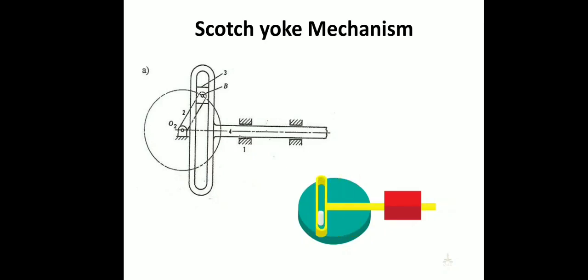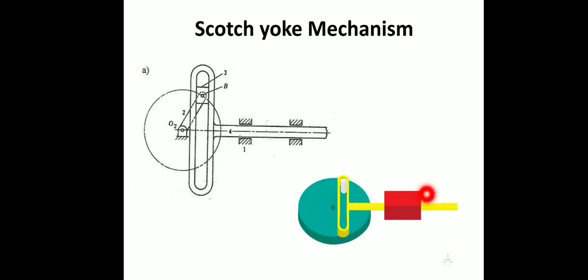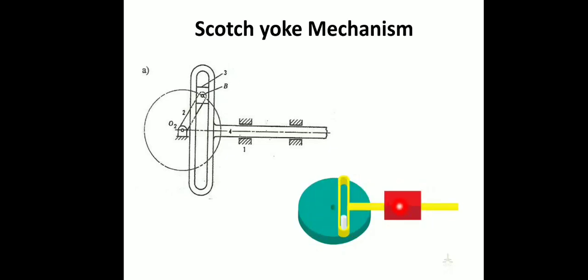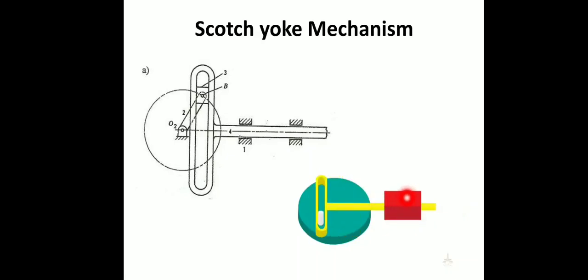The Scotch yoke mechanism converts rotary motion to linear motion. It uses a crank, slider, and connecting rod. The crank rotates, and the pin moving in the slot produces linear motion. This is the basic principle of the Scotch yoke mechanism.